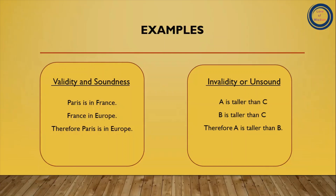Ab hum dekhte hain inke examples. Left side pe example diya hua hai validity and soundness ka aur right side pe invalidity and unsoundness ka. Validity and soundness example: Paris is in France; France is in Europe; therefore Paris is in Europe. Yahan conclusion puri tarha premises ko follow kar raha hai aur premises aur conclusion dono true hain — is liye yeh argument valid hai aur sound hai. In contrast, second example: A is taller than C; B is taller than C; therefore A is taller than B. Yahan conclusion premises ko hundred percent follow nahi kar raha — is liye yeh invalid hai aur is liye yeh unsound hai. So aaj ki video mein itna hi. Thank you so much.